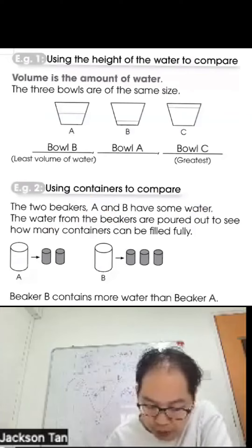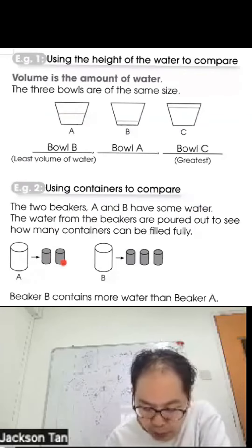Using containers to compare: the two beakers A and B have some water. The water from the beakers is poured out to see how many containers can be filled fully. A pours out two cups, B pours out three cups, so it means that beaker B contains more water than beaker A because it can pour out more containers.